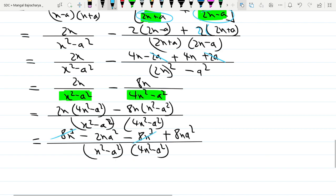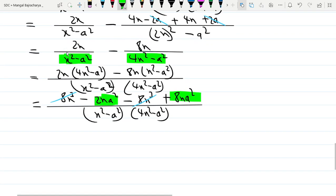So 8x cubed minus, minus plus 8x a square. So plus 8x cubed minus 8x cubed cuts, so 2x a square minus and plus minus. So 8, 2, so 6x a square divided by x square minus a square into 4x square minus a square.